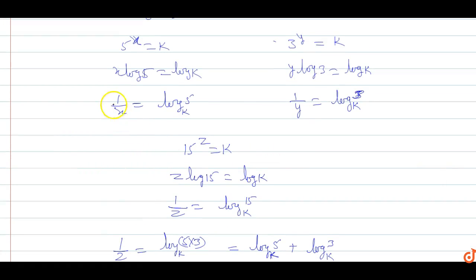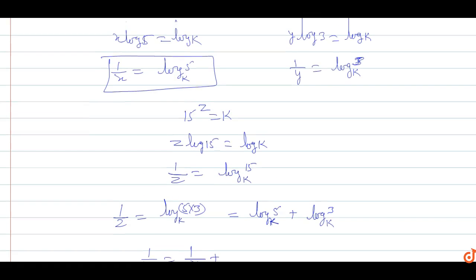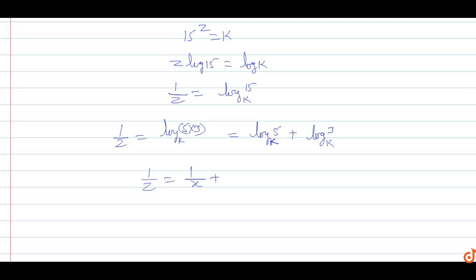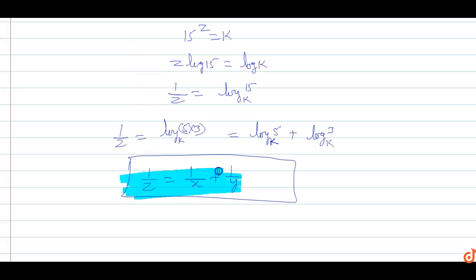Now, log 5 base k equals 1 upon x, and log 3 base k equals 1 upon y. Therefore, 1 upon z equals 1 upon x plus 1 upon y.